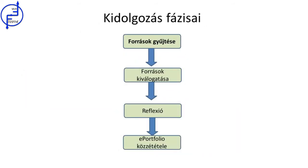An e-portfolio is put together in different stages. The first stage is gathering the evidence. Evidence should be selected depending upon the objectives and the competences that are to be achieved. It can be different kinds of information: tasks carried out in the class or information taken from different media.